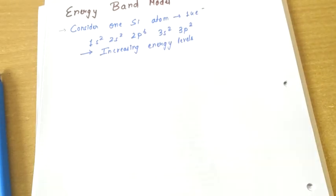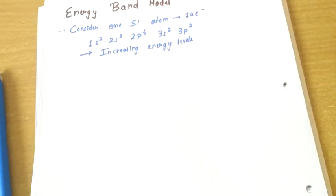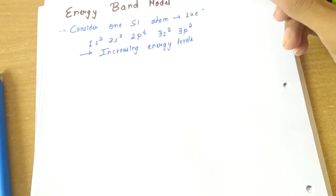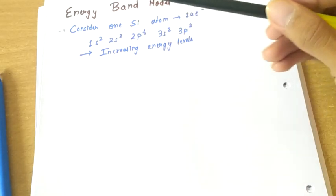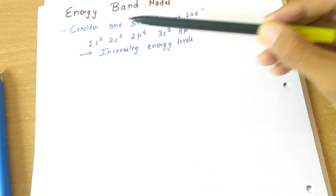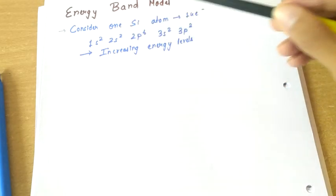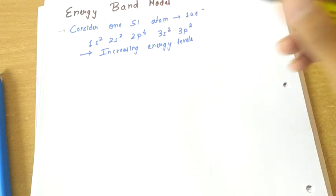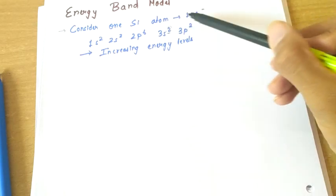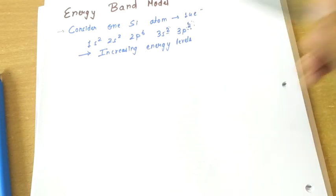We will be starting with the energy band model and focus on how bands are formed, then move to energy band diagrams. First, let's consider a single silicon atom. It has 14 electrons configured as 1s2, 2s2, 2p6, 3s2, and 3p2. So we can say it has four electrons in its valence shell.